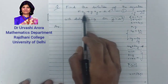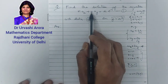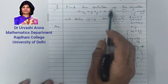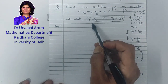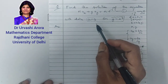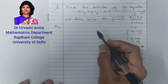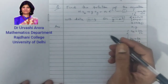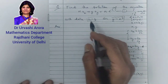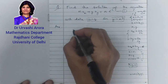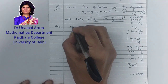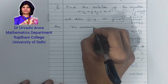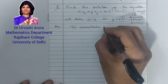Coming back to the PDE: x·u_x + y·u_y = x·e^(-u). Because it is a first order quasi-linear PDE, I am going to apply Lagrange's method — the method of characteristics — in the usual manner. We write the characteristic equations.